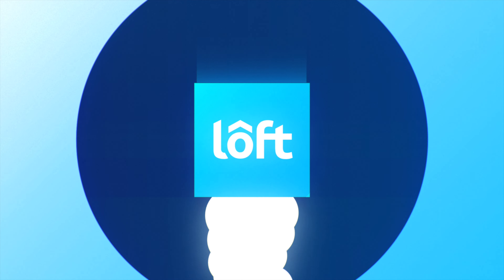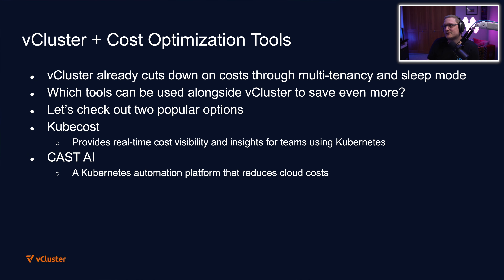If you've watched some of our previous videos, you may have noticed that we've been talking about cost optimization and how you can save money on Kubernetes. One of the biggest selling points of vCluster is being able to save money using multi-tenancy and sleep mode. Today we're going to take a look at two other tools you could use in combination with vCluster to save money: figure out how much you're spending, automatically resize different things, and just cut down on costs on the cloud or on-prem. Let's check out two popular options.